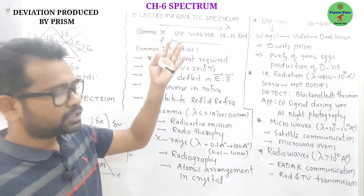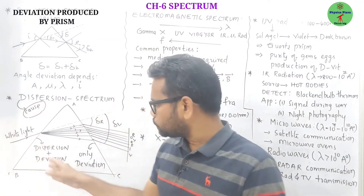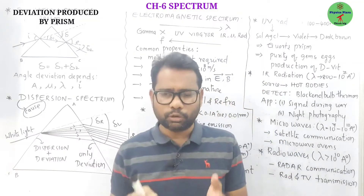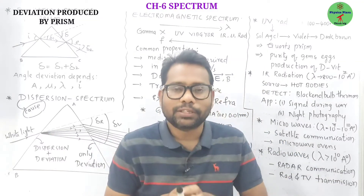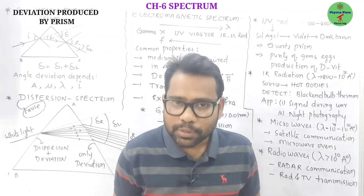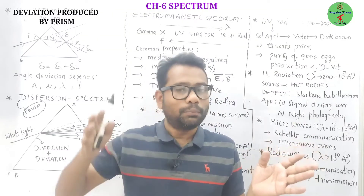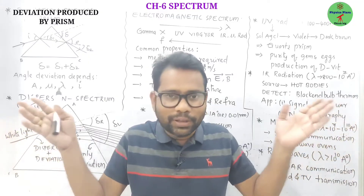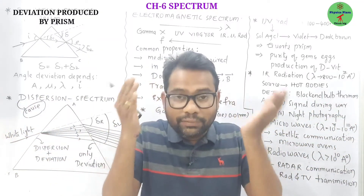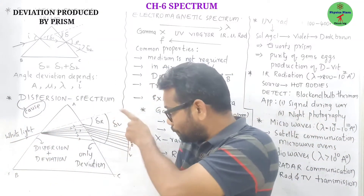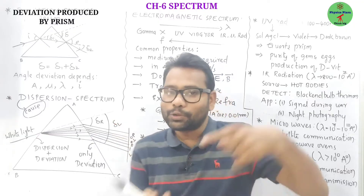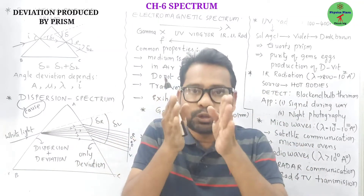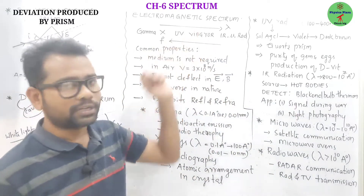Now let us come to the electromagnetic spectrum. When sunlight is passed through a prism, we get VIBGYOR colors. But it doesn't mean that only these colors are present in sunlight. Many experiments proved that beyond violet color and beyond red color, so many other radiations are possible. Those radiations are invisible. So visible spectrum plus invisible spectrum together we can call the electromagnetic spectrum.